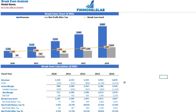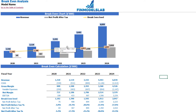On the break-even tab you can find the calculation of the revenue break-even level and a break-even chart. For this particular use case, the revenue break-even level is less than the actual revenue, which means the company is profitable.